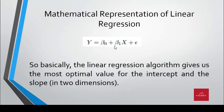Mathematically, linear regression is represented using this equation where y is the dependent variable, beta is a constant which is usually the y-intercept, x is the independent variable with a coefficient plus the error term. Linear regression gives us the most optimal value for the intercept and the slope.